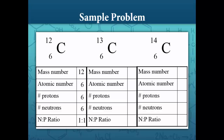The mass number of carbon-13 is 13, and its atomic number is still 6. That means carbon-13 has 6 protons and 7 neutrons, and a neutron-to-proton ratio of 7 to 6. Carbon-14 has a mass number of 14 and atomic number 6. That means it has 6 protons, 8 neutrons, and a neutron-to-proton ratio of 8 to 6, which reduces to 4 to 3.